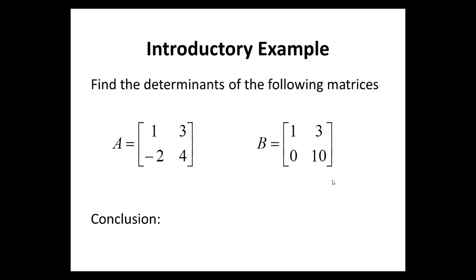Introductory Example 2. Find the determinants of the following matrices A and B. Observe that we have multiplied row 1 of matrix A by 2, added that to row 2 and left our answer in row 2. So, 2 plus negative 2 gives us 0, 6 plus 4 gives us 10. So, we have also performed an elementary operation on the matrix A to get the matrix B.